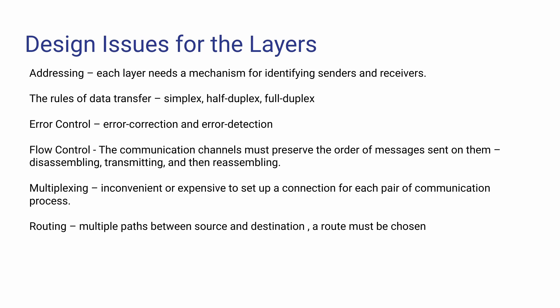Addressing in each layer provides a mechanism for identifying senders and receivers. Data transfer rules include simplex, half duplex, and full duplex. Error control means the software itself must handle transmission errors, checking frames and packets sent. Flow control ensures messages are properly assembled and transmitted. Multiplexing is used because it is inconvenient and expensive to set up a connection for each pair of communication processes. Routing involves choosing the shortest path among multiple paths between source and destination. These are the design issues.